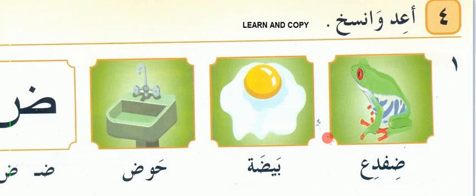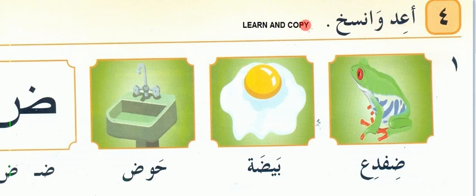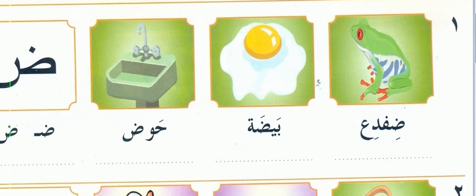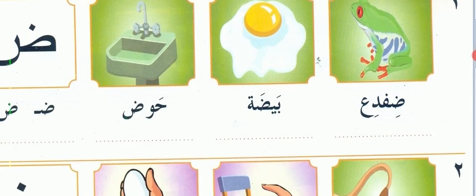Welcome children, we have reached the second part of lesson number 19. Here, Oid V'ansakh — Learn and Copy. There is the Divda — same thing. This is a very easy thing coming.